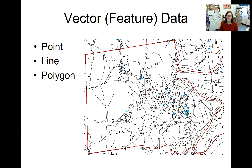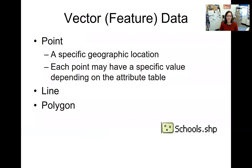Moving on to a refresher on points, lines, and polygons. Points are a single dot in space — they have a geographic location and can have many attributes associated with them. But a point is never going to have distance associated with it, because it's just one location. A point is never going to have area associated with it either, because it's just a single location. So in order to get those things, we need a different vector data type.